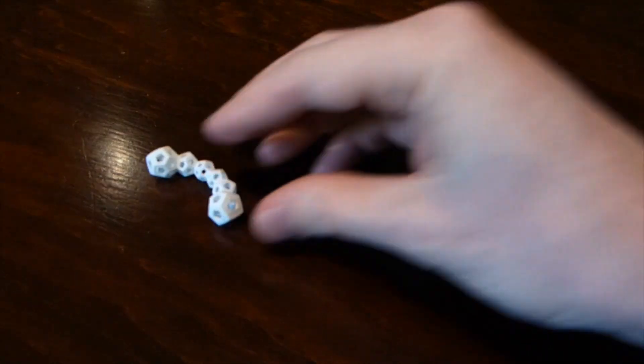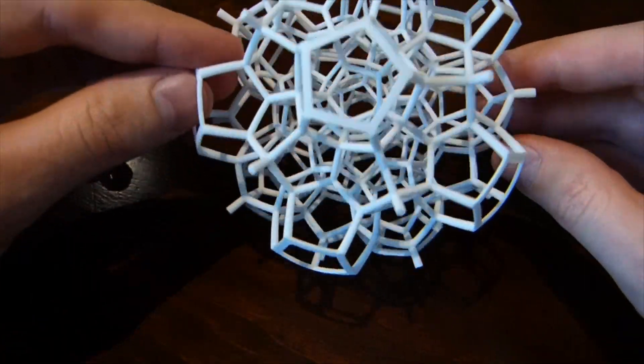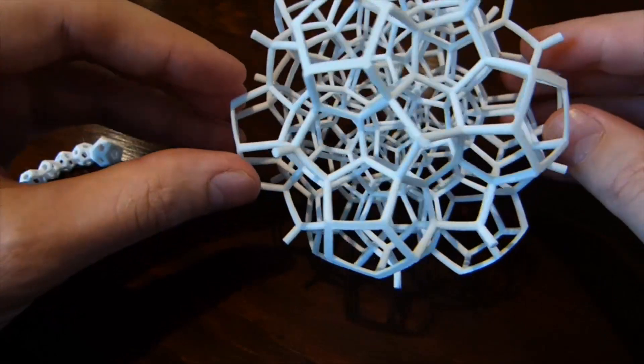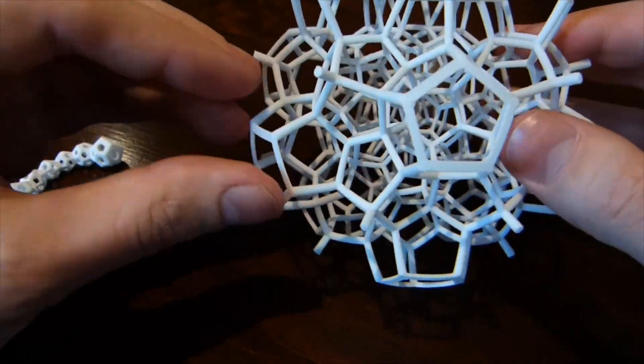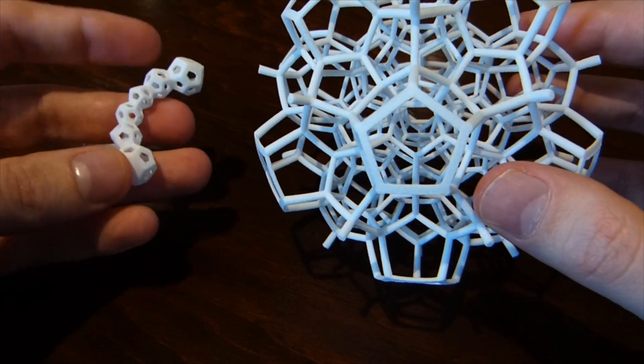So this is related to the 120-cell, which is a four-dimensional polytope which has 120 dodecahedra faces. So this is the half 120-cell. And that's where the name comes from.